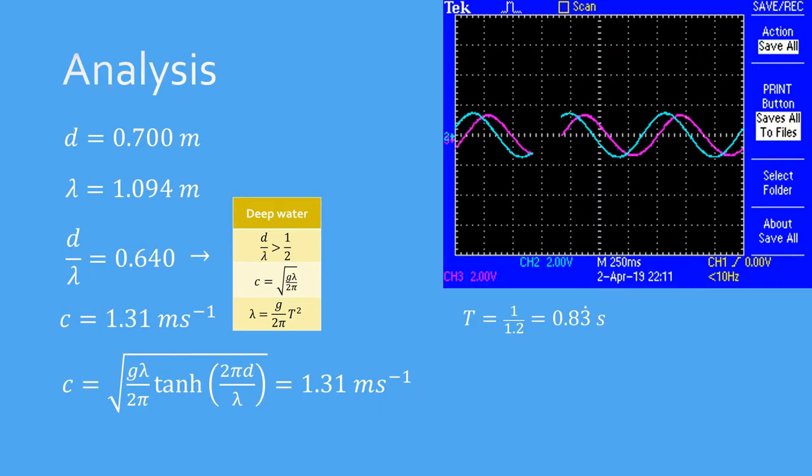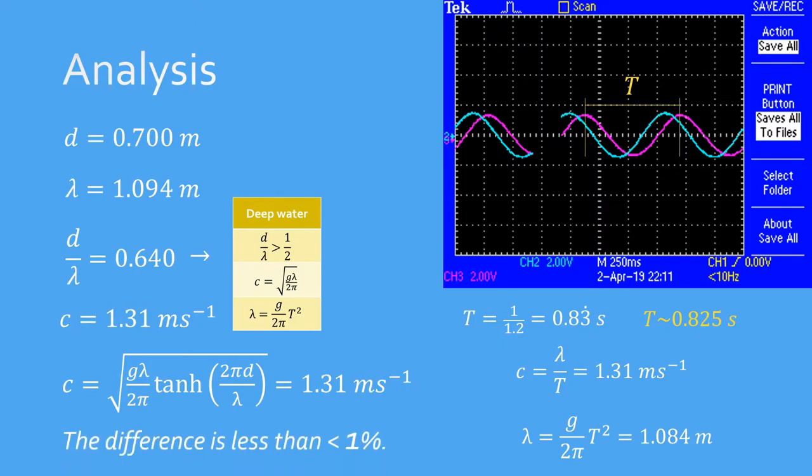We can double check this value by using data from the oscilloscope. By measuring the time between two adjacent crests on the same wave, we see that the wave period is roughly 0.825 seconds. And then we can use the definition of celerity, wavelength over period, which gives us 1.31 m per second, which is the same as what we had. Using the wavelength to wave period relationship, we get the wavelength to be 1.084 m, which deviates by less than 1% from the estimate we obtained with our simple method previously.